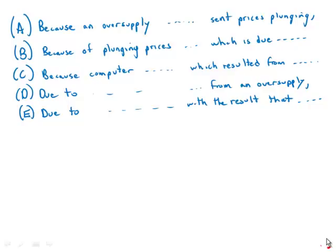Because an oversupply of computer chips has sent prices plunging — that's the underlined section, and that's not too bad. There are no obvious grammatical mistakes with that. But we'll compare the other ones. Choice B: 'because of plunging prices for computer chips which is due to an oversupply' — that's wordy and indirect, so we're not going to go with that.